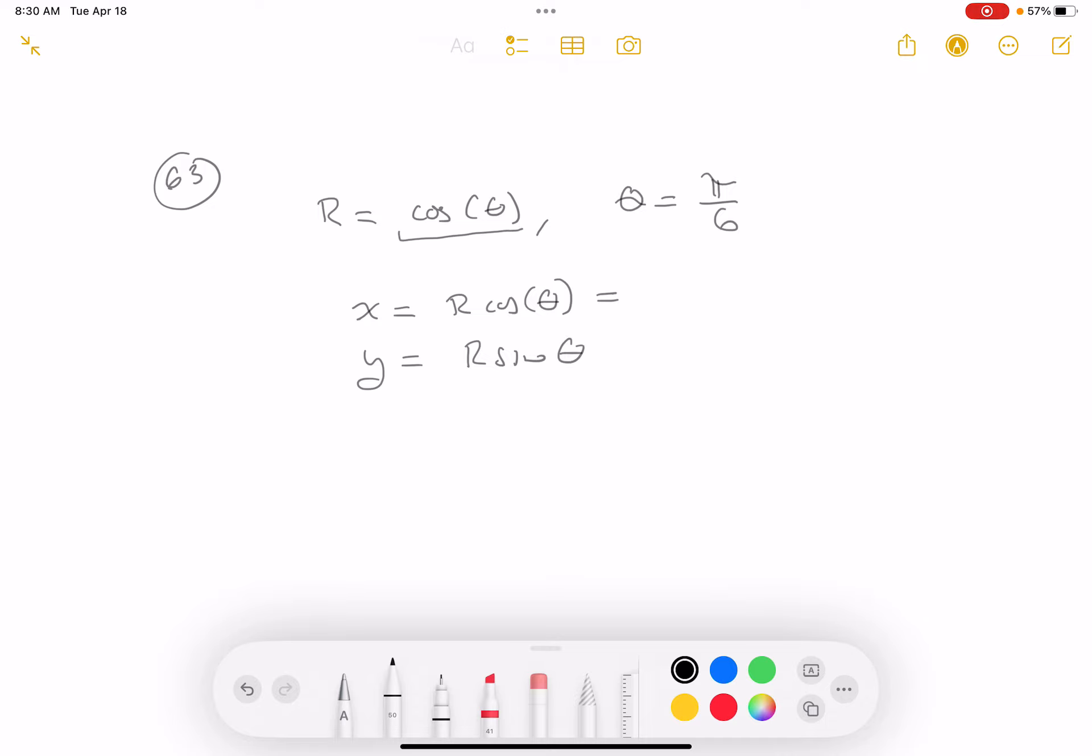I know what r is—it's cos(θ). So x equals r times cos(θ), which is cos²(θ). And y is r times sin(θ), which is cos(θ) sin(θ). I can write this differently though—as (1/2) sin(2θ).